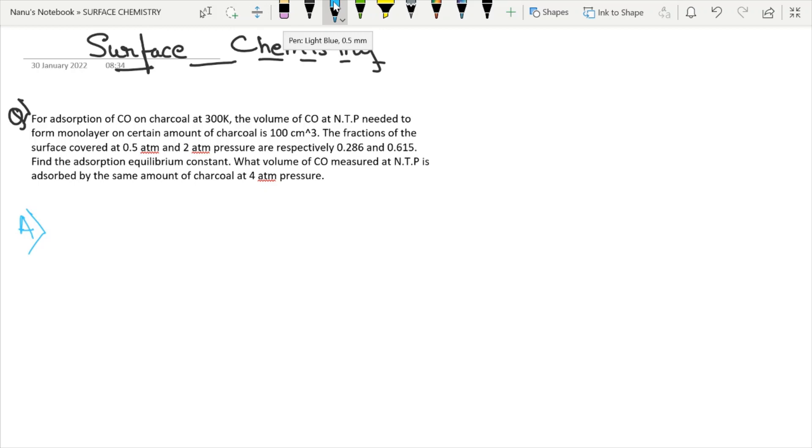So from this statement, when we are reading the fractions of the surface covered at 0.5 atm and 2 atm pressures are respectively 0.286 and 0.615, let us take theta 1 equals 0.286, theta 2 equals 0.615. Write down the numerical question in a mathematical form. Things will get much more simplified.